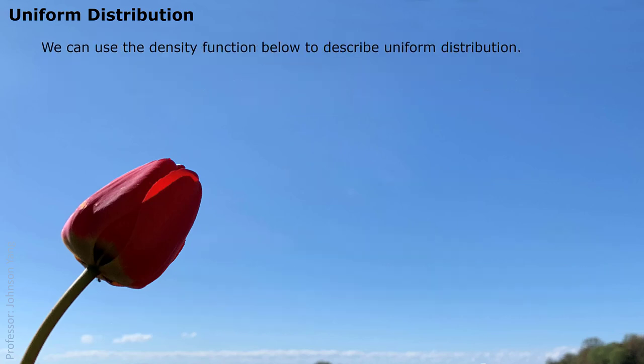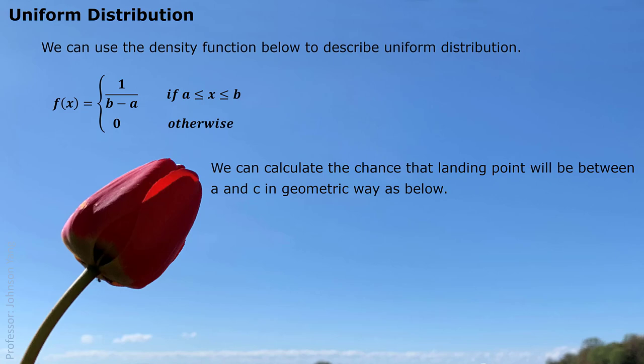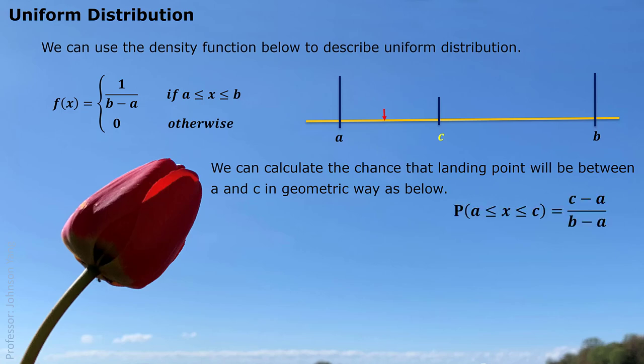We can use the density function to describe uniform distribution. Since we only assume the pin can land between a and b, anywhere else would be zero chance, so the density is zero outside this interval. Within this interval, the density is the reciprocal of the length of the interval — 1/(b − a). We can calculate the chance that the landing point will be between a and c geometrically: we measure the length c − a divided by the length b − a, and that ratio gives us the probability.